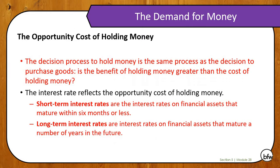The first concept to understand in this graph is the demand for money. Money does have an opportunity cost to it if you decide to hold on to it, meaning keeping it in cash or just in your checking account as a checkable bank deposit. The decision process to hold money is the same as the decision to purchase goods: is the benefit of holding money greater than the cost of holding money? Interest rates — meaning what people earn on their money — impact the opportunity cost of holding money.